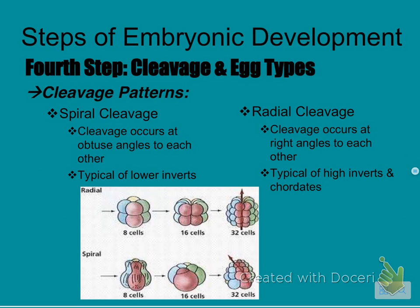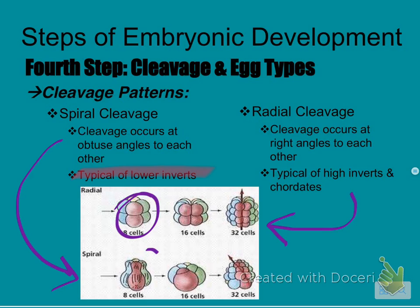We also have spiral cleavage and radial cleavage. Spiral cleavage occurs at obtuse angles and is typical of lower invertebrates — things without backbones. Higher invertebrates, on the other hand, do radial cleavage, which occurs at right angles. Looking at the picture, radial cleavage is the top one and spiral cleavage is the bottom — notice how different they look from each other even at the eight-cell stage.